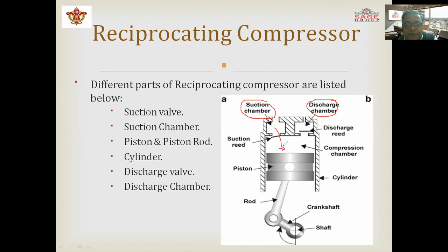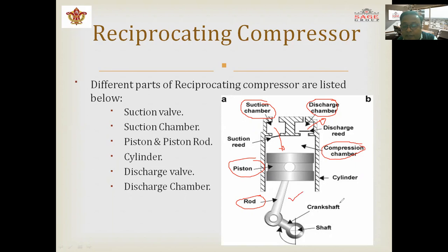This is called the suction chamber, where air moves inside. After compression, air goes outside through the discharge chamber. This is the piston, moving in the engine cylinder. This is the compression chamber where air is compressed by the piston's movement. This is the connecting rod, which connects the piston to the crankshaft. This is the crankshaft where rotary motion takes place.